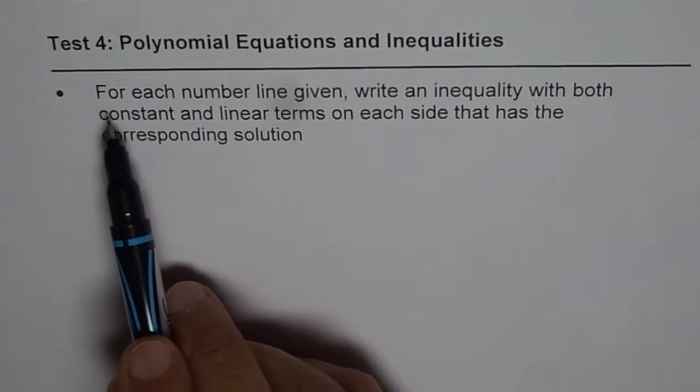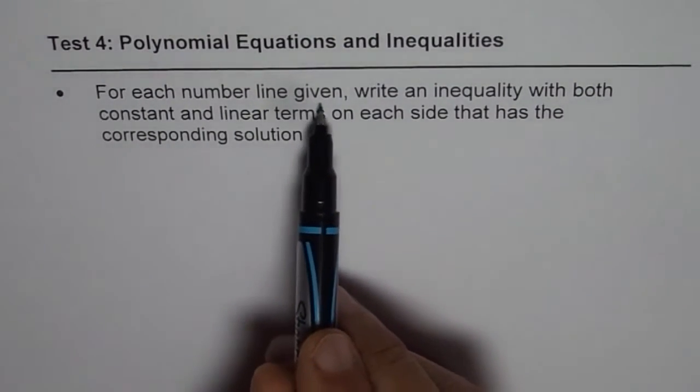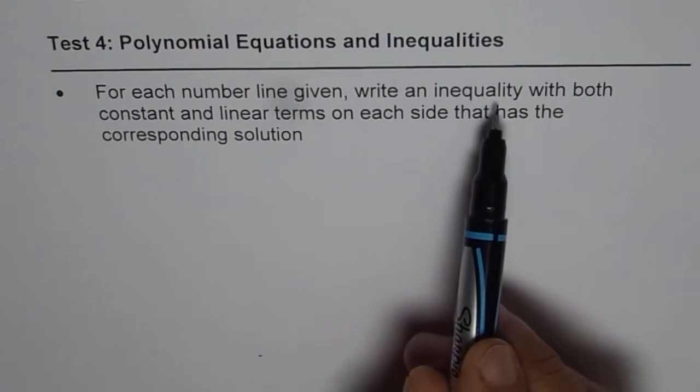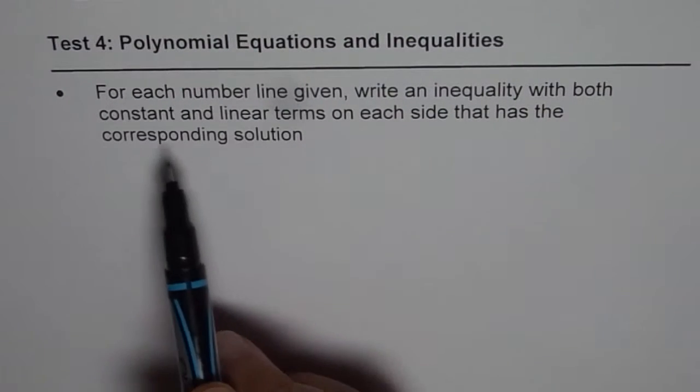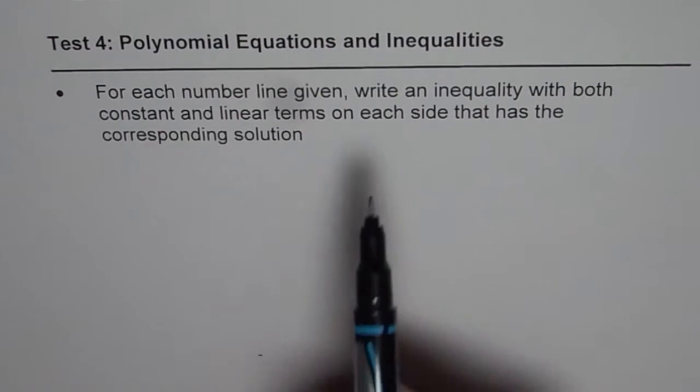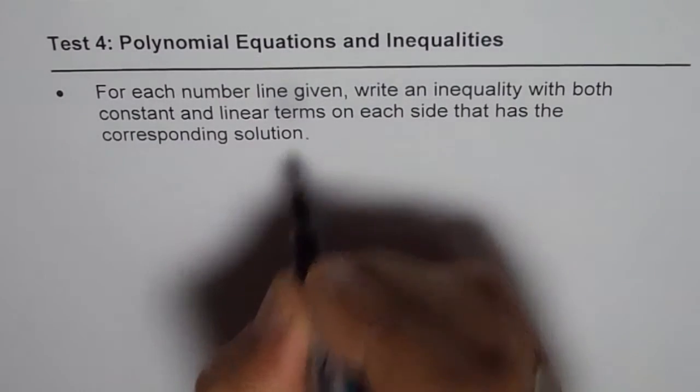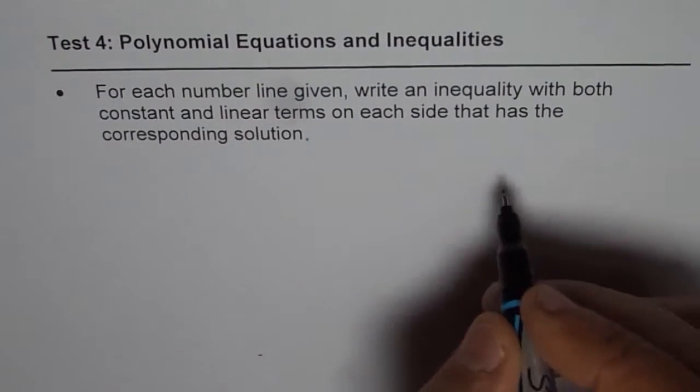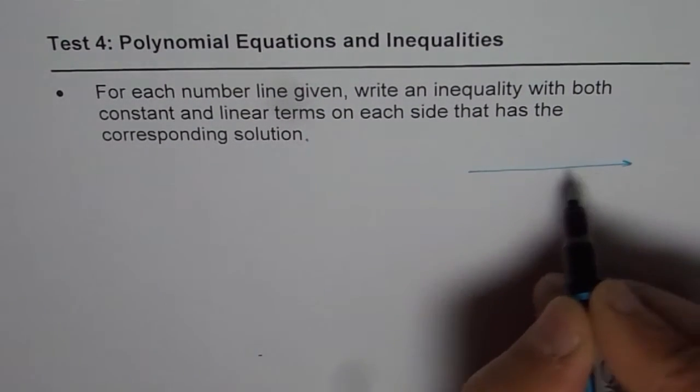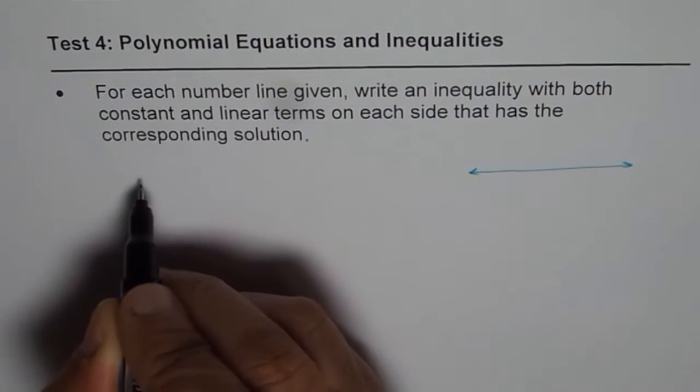The question is, for each number line given, write an inequality with both constant and linear terms on each side that has the corresponding solution. So, we'll create one question here. Let's say that is a number line. I'll make two for you.